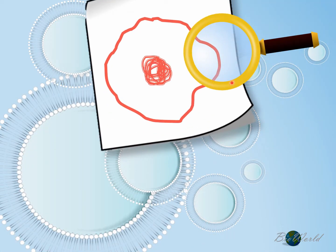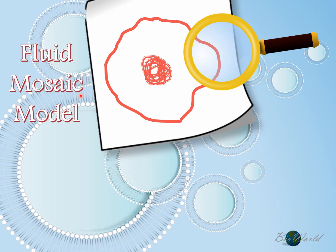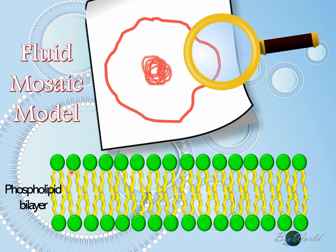If we were ever able to magnify the structure of the plasma membrane — not by using a magnifying glass but using a very powerful electron microscope — we would be able to visualize the fluid mosaic model as proposed by Singer and Nicholson. Based on the fluid mosaic model, the plasma membrane is mainly made up of the phospholipid bilayer. However, there are a number of different molecules placed within the bilayer.